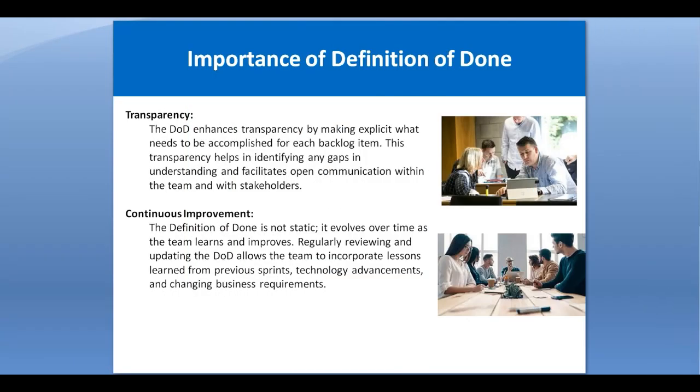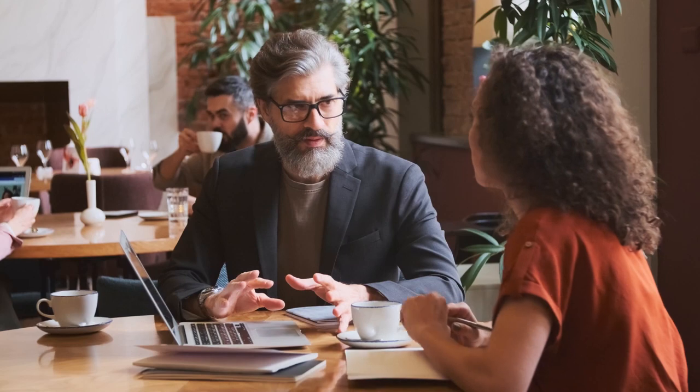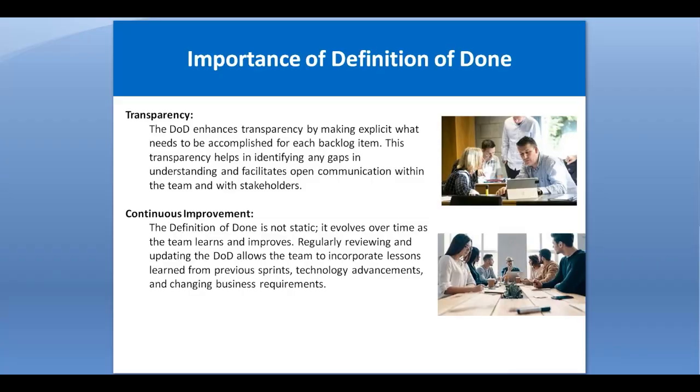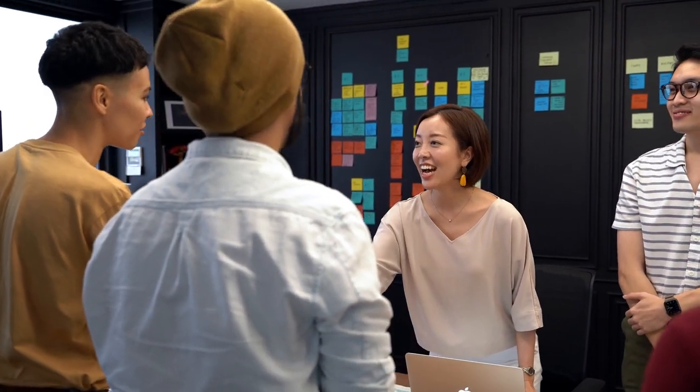Transparency means the Definition of Done enhances transparency by making explicit what needs to be accomplished for each backlog item. This transparency helps in identifying any gaps in understanding and facilitates open communication within the team and with stakeholders. Whenever we are delivering the product increment to the stakeholders, they know the criteria at which they have to accept it. Both the Scrum development team and the customer know the acceptance criteria, so there is no ambiguity or issues.